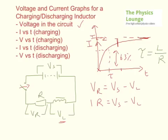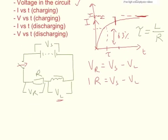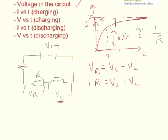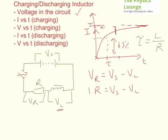A higher resistance means a shorter time constant, so it reaches its peak earlier. Because the greater the change in current between off and on, the greater the induced voltage. Now, the voltage across the resistor against time follows the current graph. But we're also considering voltage across the inductor — VL against time.